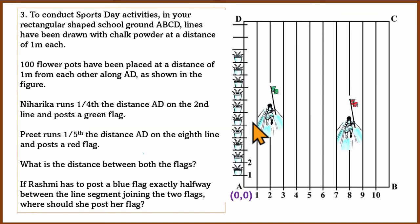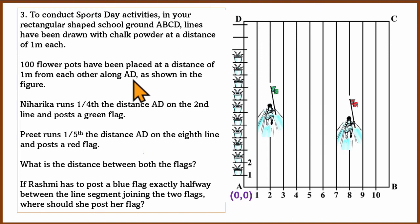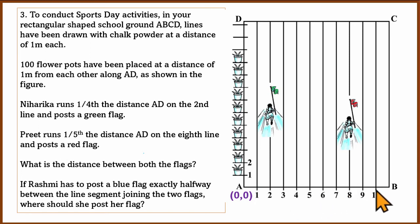The third question is more complex. To conduct sports day activities in a rectangular shaped playground, lines A, B, C, D have been drawn with chalk powder at a distance of 1 meter each in horizontal and vertical directions. 100 flower pots have been placed at a distance of 1 meter from each other along AD as shown in the figure.